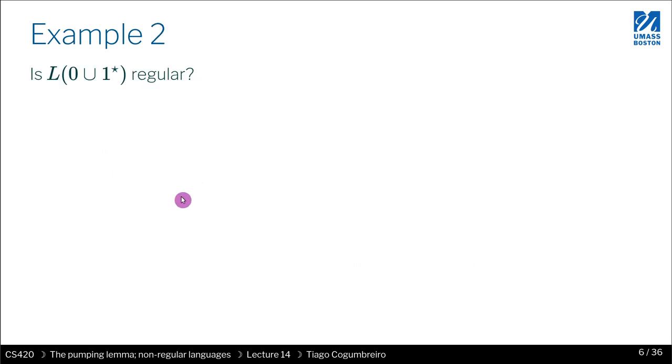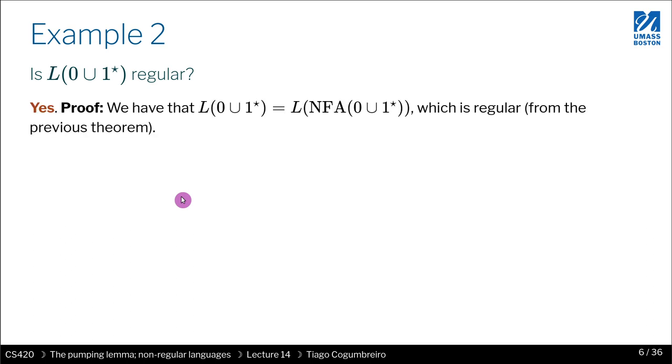Next example, let's say we have a regular expression that says that we either accept zero or a sequence of ones, which is possibly empty. So is this regular? And as you've learned as well, yes, the language of the regular expression is regular because we can convert this regular expression into an NFA, which we then convert into the DFA. Or we use the previous theorem. Because we know that any NFA, if you have a language that is recognized by an NFA, that language is regular.